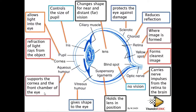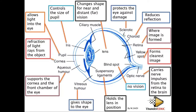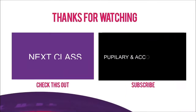Lastly, the aqueous humor is a fluid found at the front of the eye. It supports the cornea and the front chamber of the eye, keeping everything in shape and in position. It also helps balance pressure — if there is pressure on one side, this fluid balances it on the other side. Please don't go to the exam without knowing the functions of each part, because you don't know which part they might ask about. Next, let's look at binocular vision.